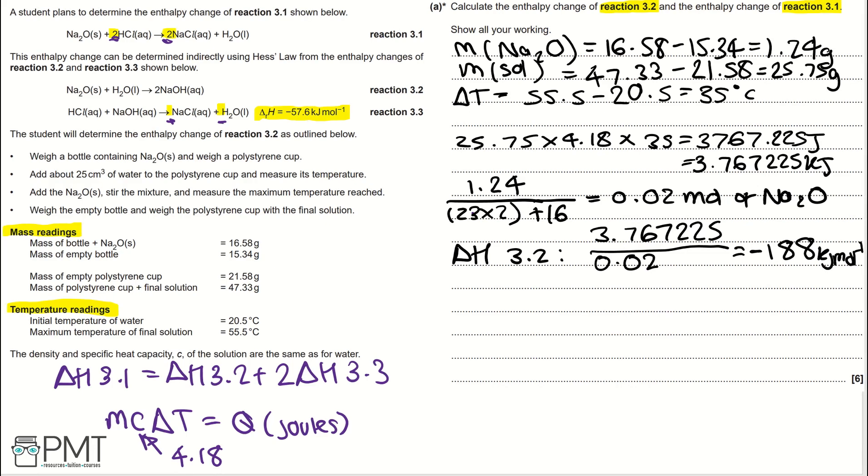Then, for reaction 3.3, we know that enthalpy change value, so we can work out reaction 3.1. So, the enthalpy change of reaction 3.1 is equal to minus 188 plus 2 times minus 57.6, which is the enthalpy change of reaction 3.3, which gives us minus 303.2 kilojoules per mole.